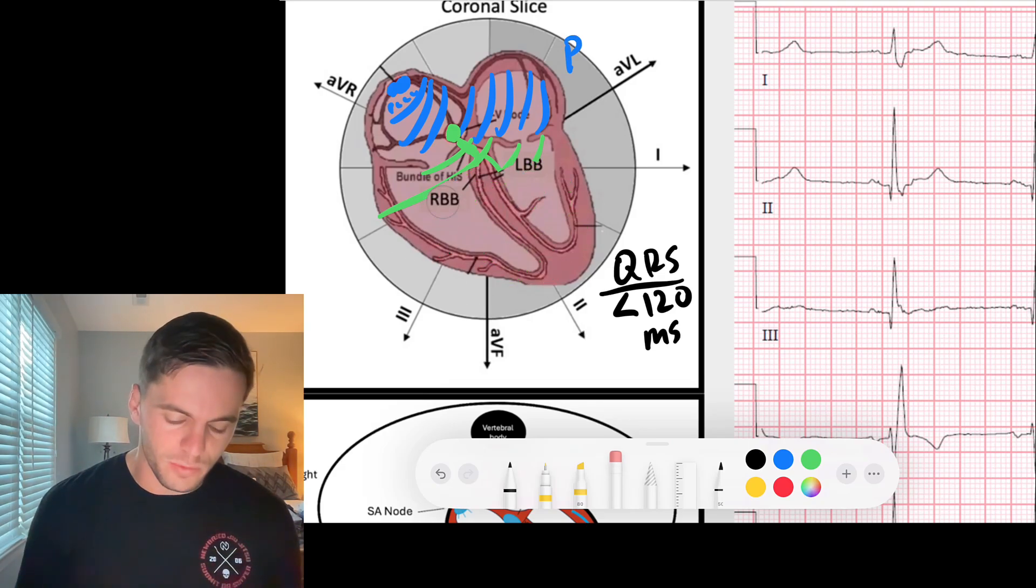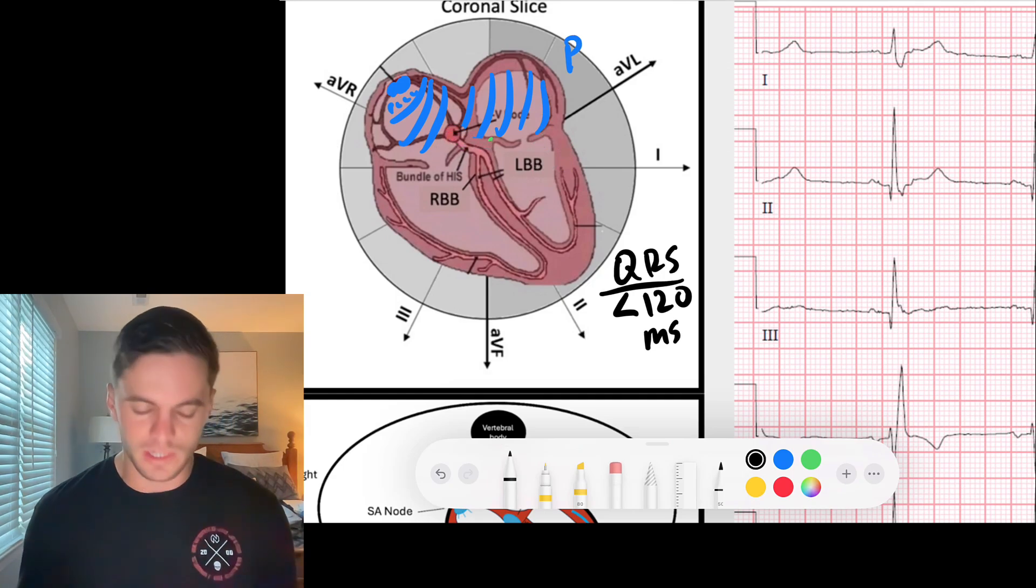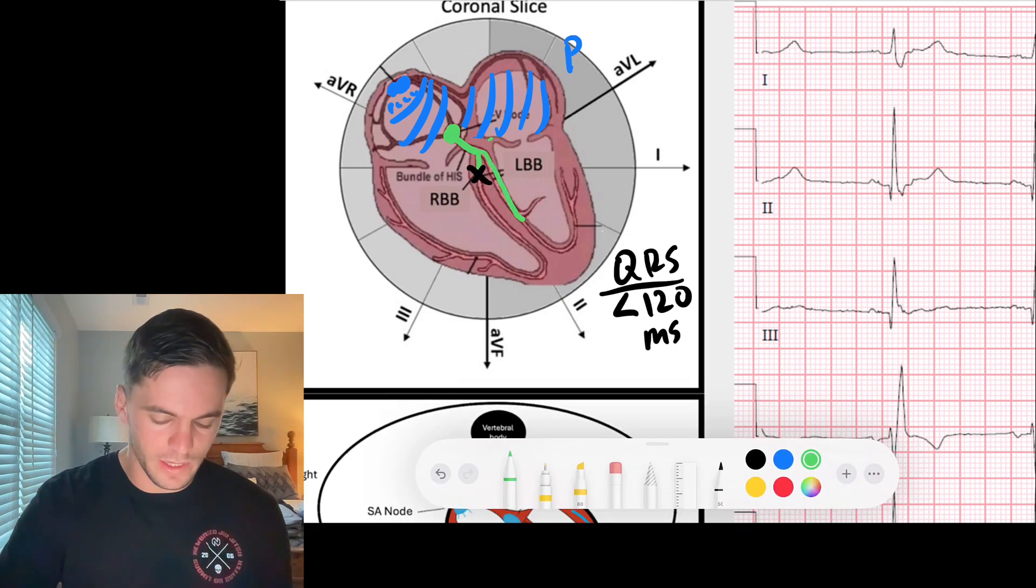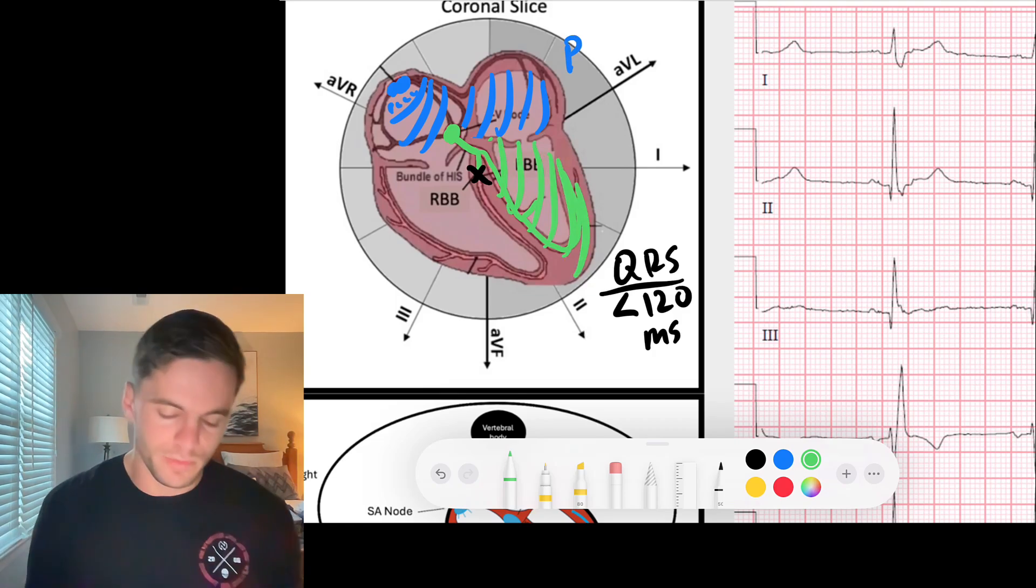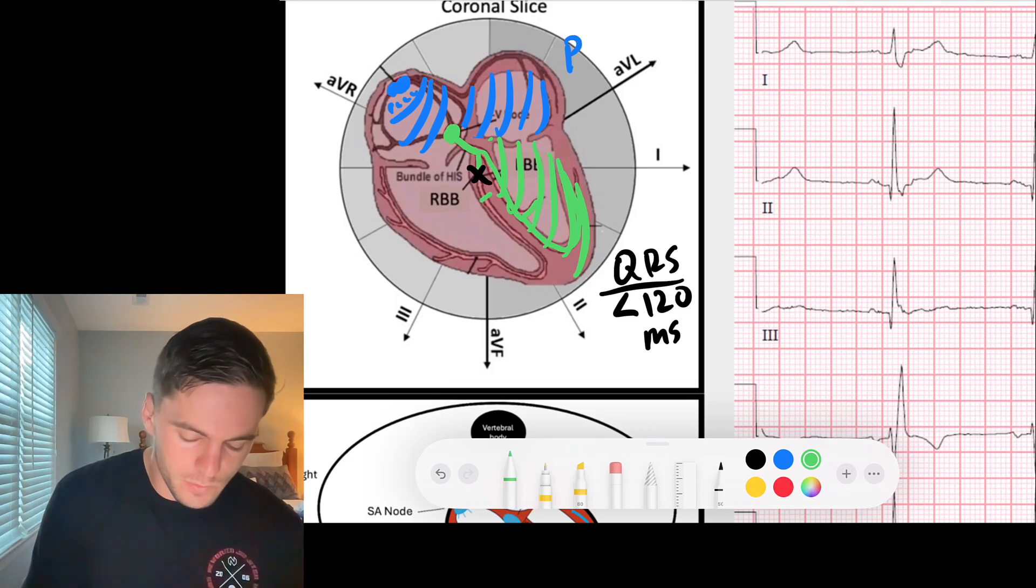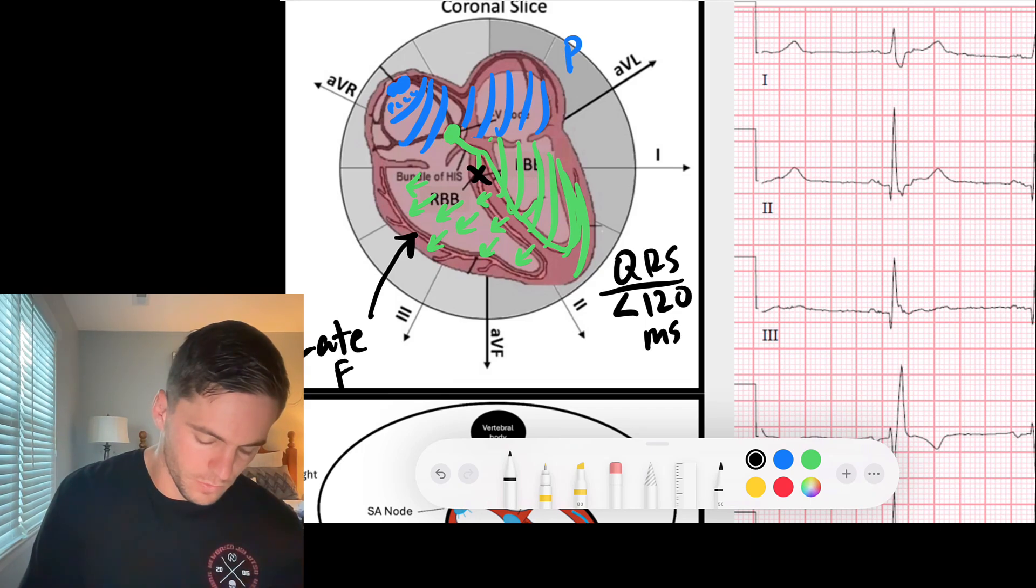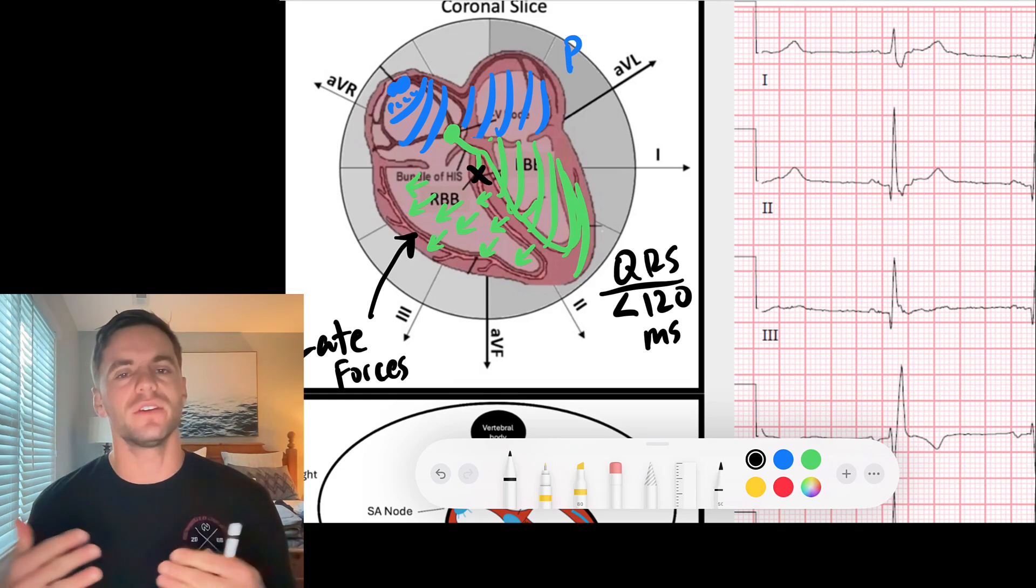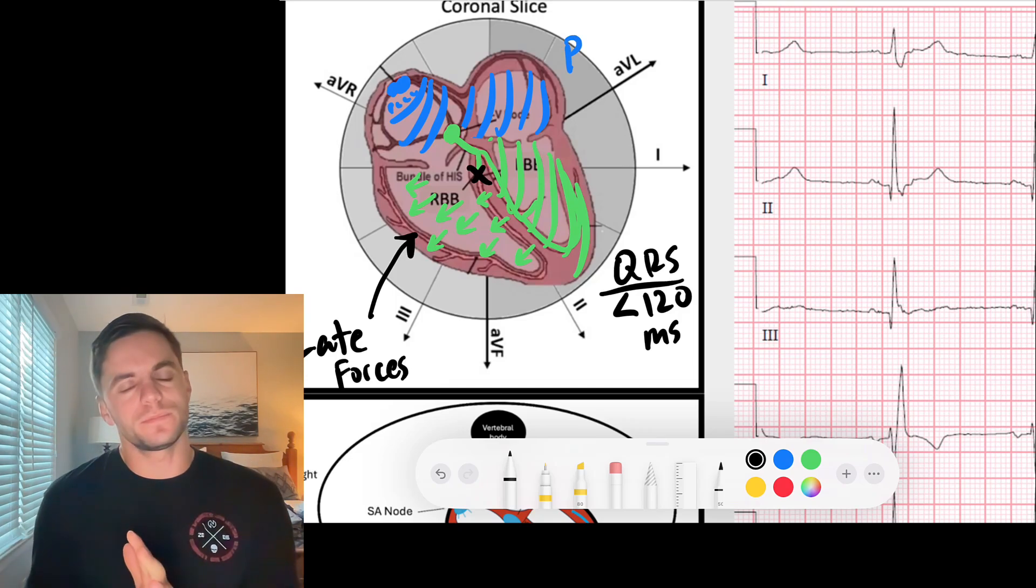So in a right bundle branch block or any of the bundle branch blocks, but we're going to talk about right bundle branch blocks today. When that signal gets to the AV node and tries to go down the bundle of hiss, it tries to go down the right bundle, but guess what? The right bundle is blocked. So what ends up happening is the signal goes all the way down the left bundle, rapidly depolarizing that territory of tissue, but then in order to depolarize the right side of the heart, has to go from cell gap junction to gap junction all the way back across the myocardium. And in the concept of time, this is happening late.